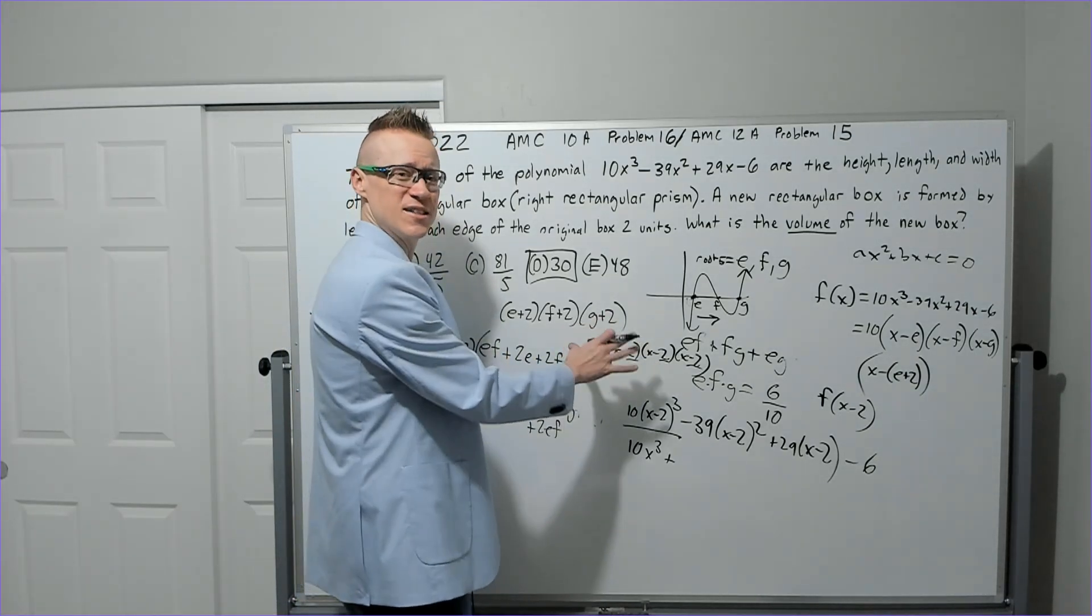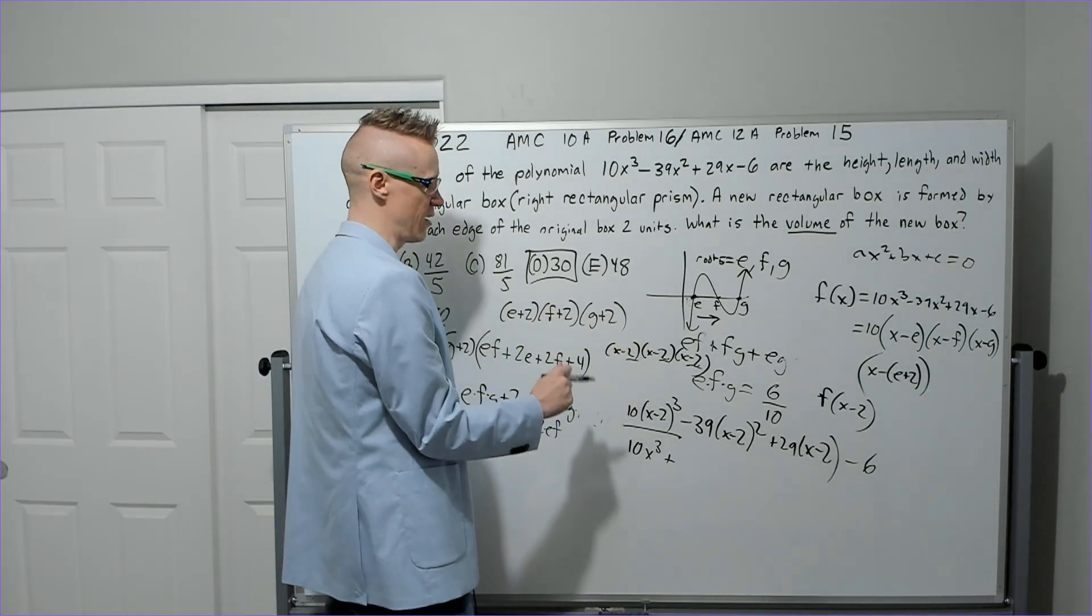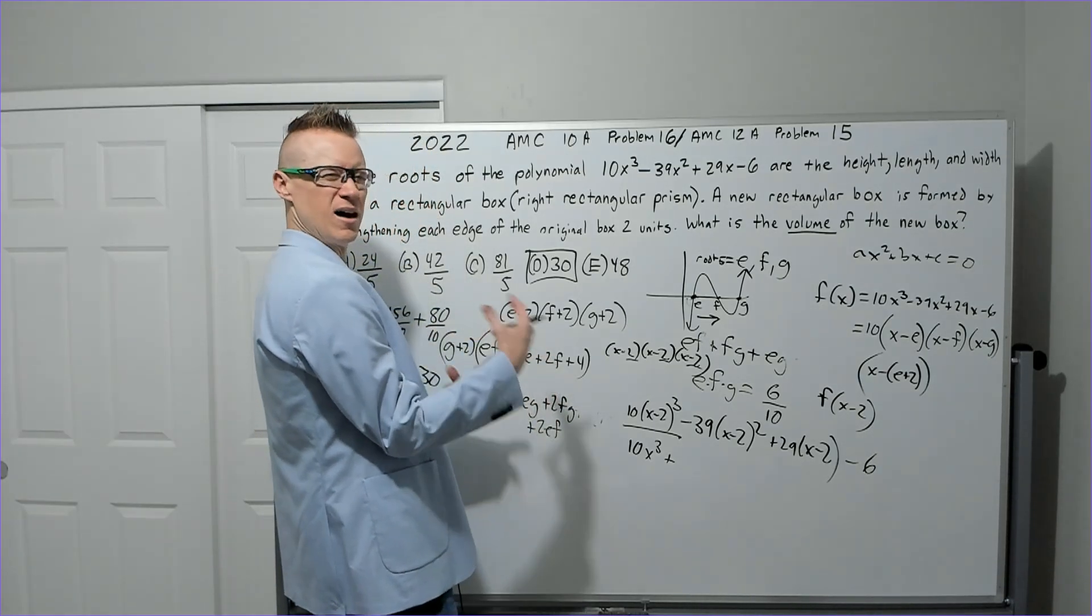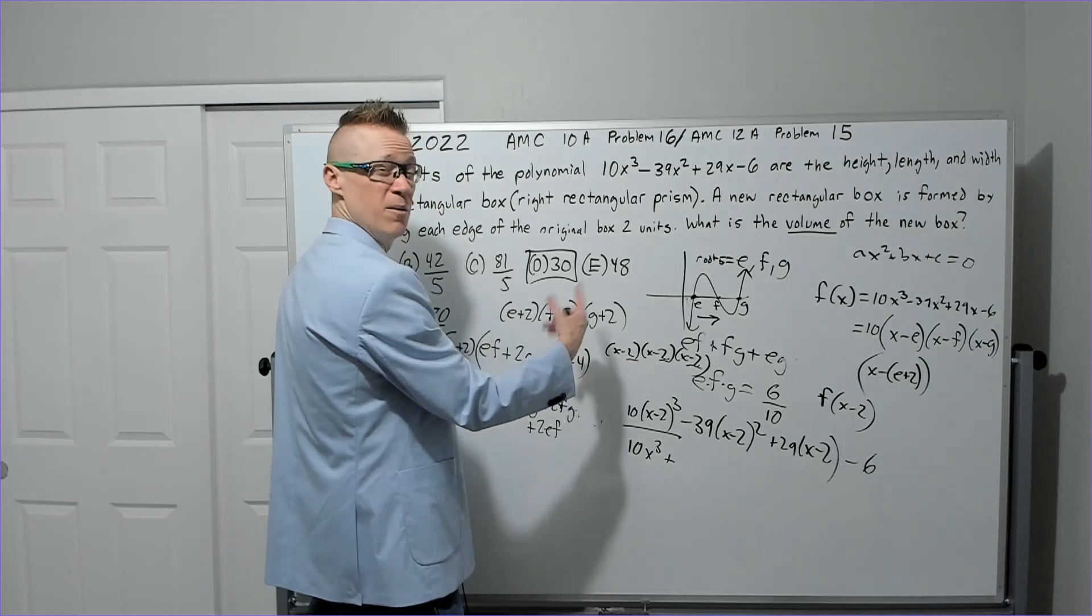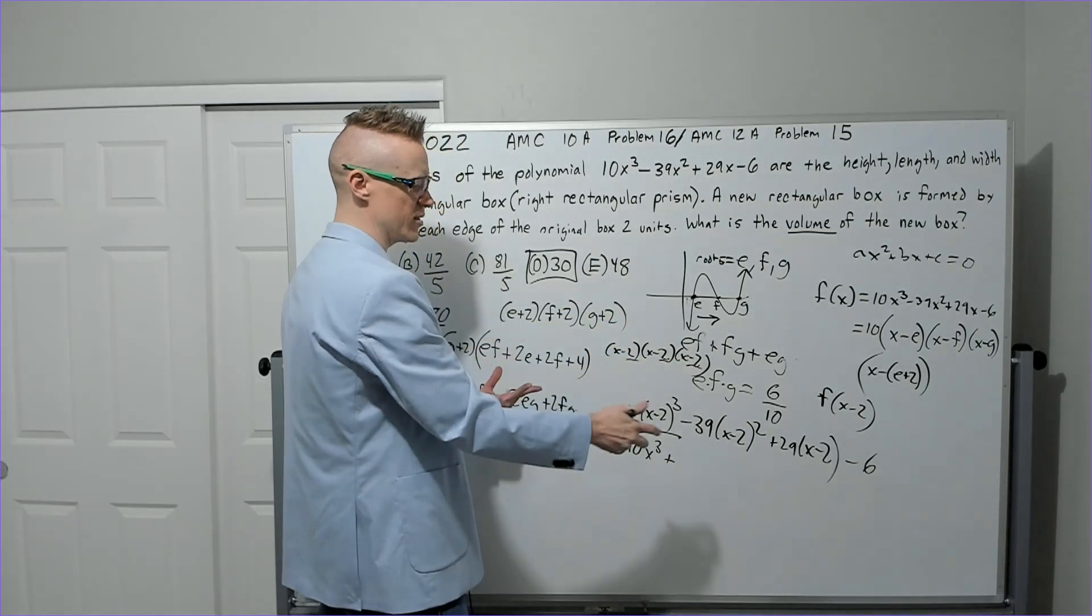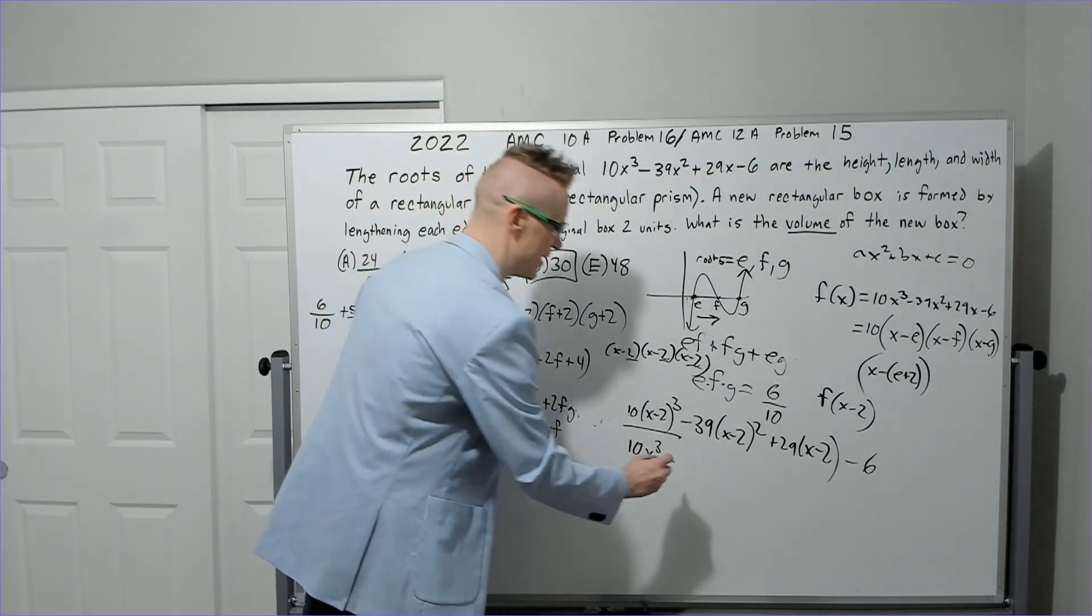And you get the constant from this term by selecting the constant in each of these. Again, that idea of selecting something else they cover in The Art of Problem Solving, especially when you're doing combinations, so a binomial expansion. -2 × -2 × -2 is -8 times 10 is -80.